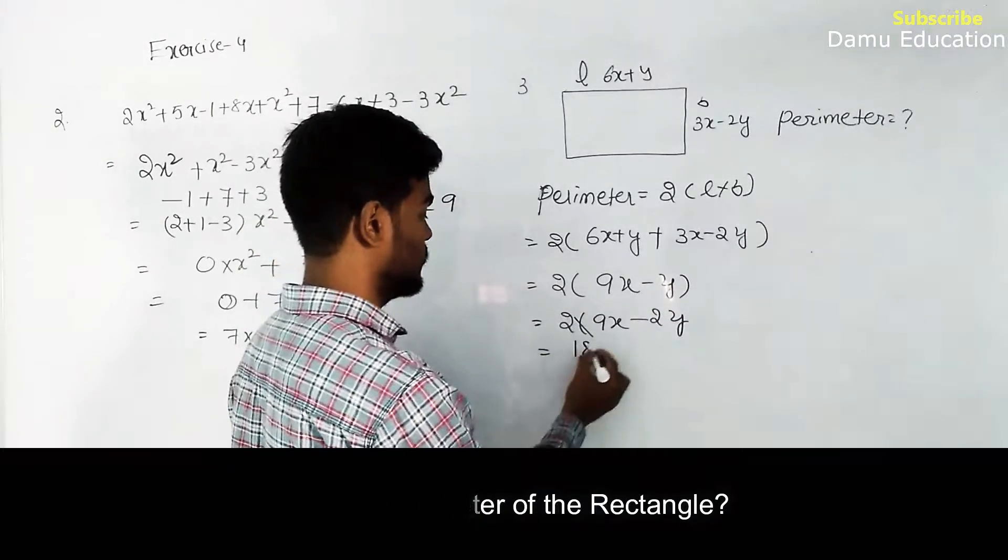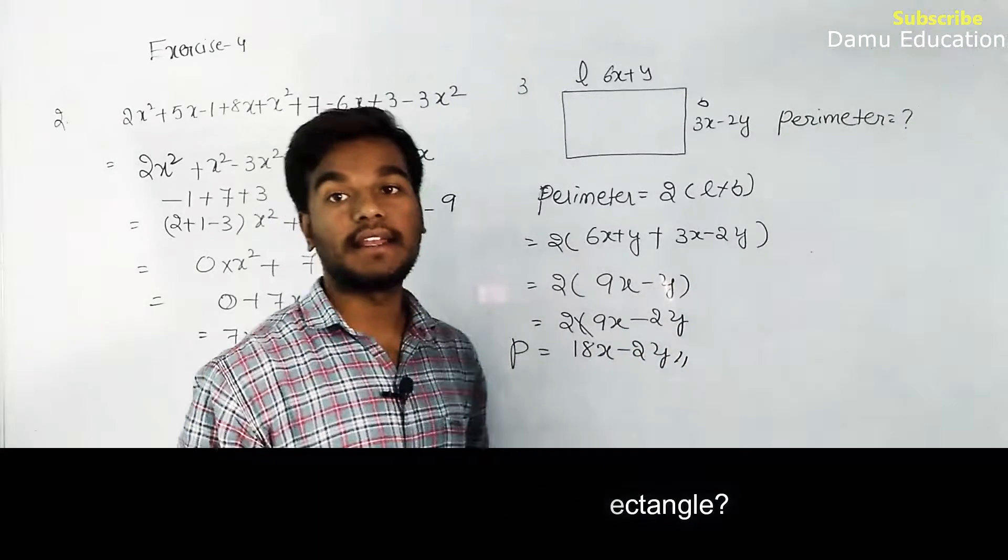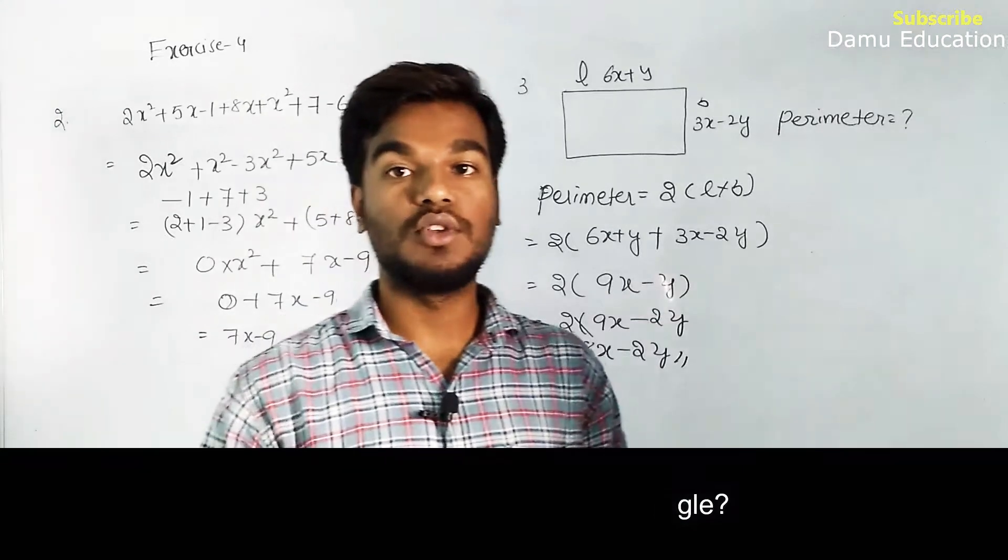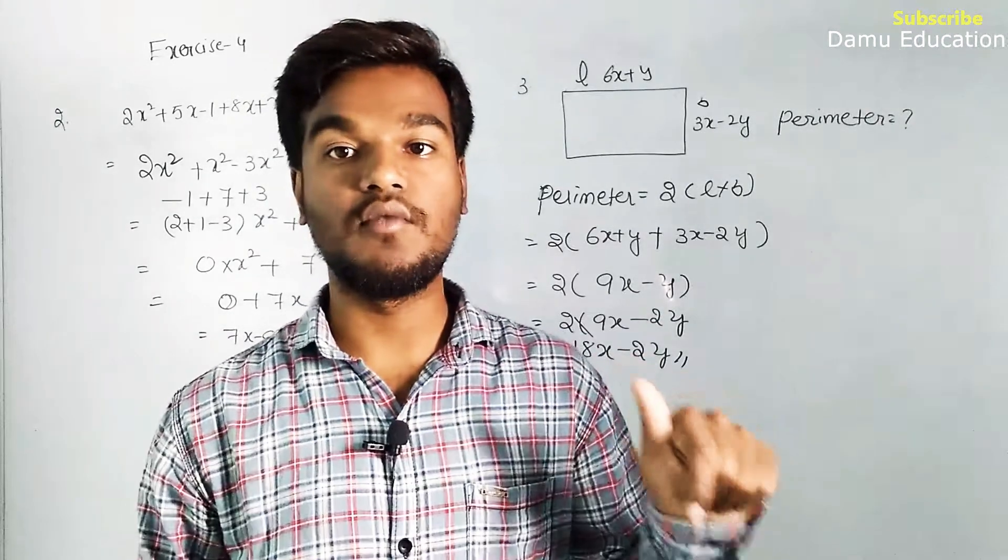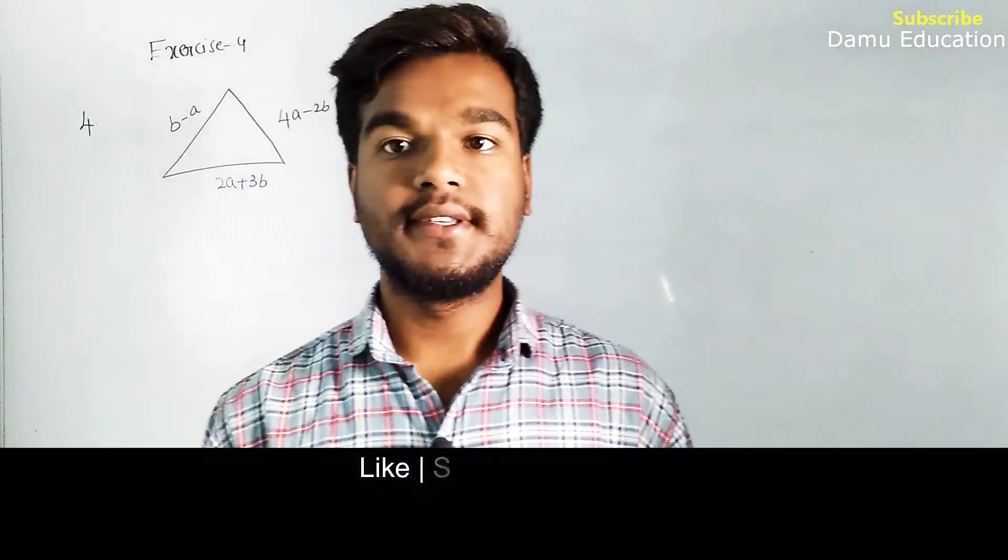Then 2 into 9x is 18x minus 2y. So this is the perimeter of rectangle.